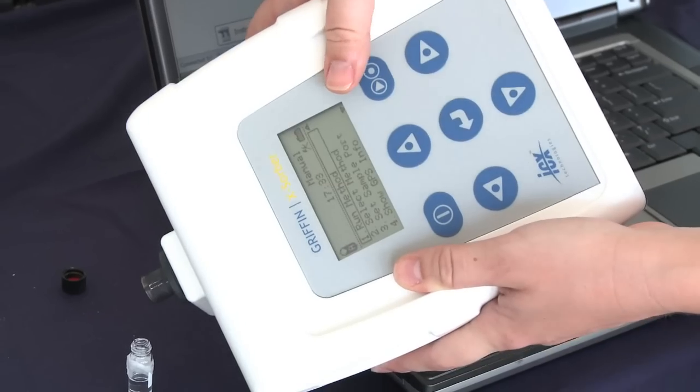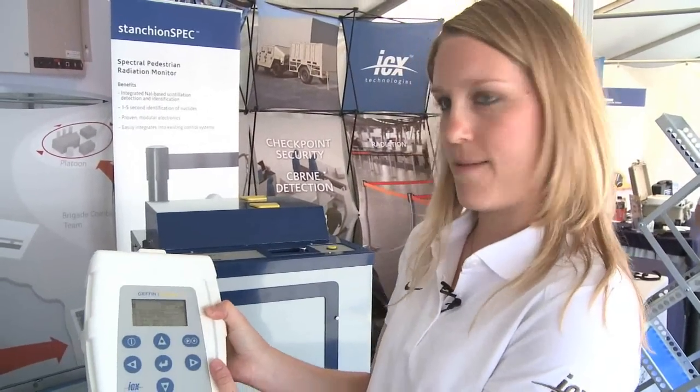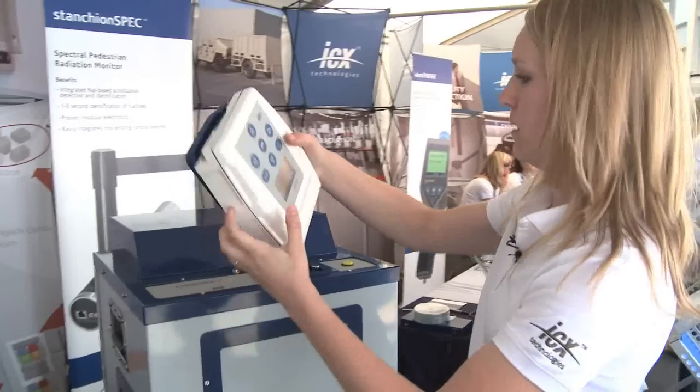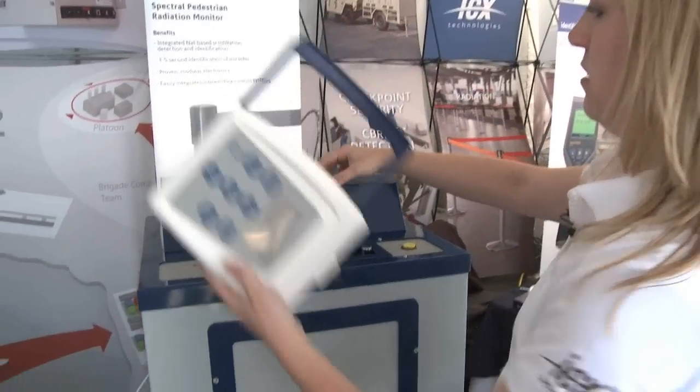Now we're going to take the Xorber over to the mobile GCMS and analyze the sample. To do that, you open the handle for balance, open up the sampling port on the Griffin 450, and insert the device.